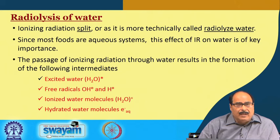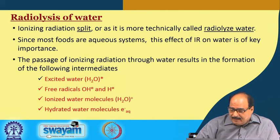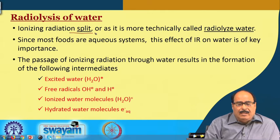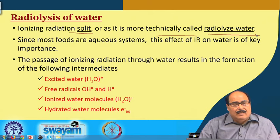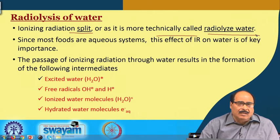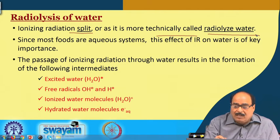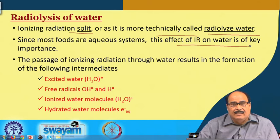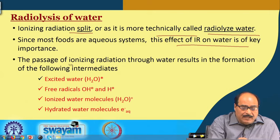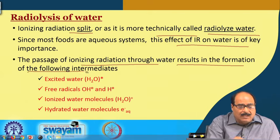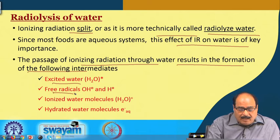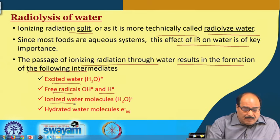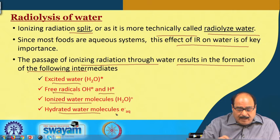Radiolysis of water — the effect of ionizing radiations on water — means these radiations split or radiolyze water. Since most foods are aqueous systems with varying amounts of water, this effect is of key importance. The passage of ionizing radiations through water results in the formation of free radicals like hydroxyl free radicals or hydrogen free radicals. It may also result in the formation of ionized or hydrated water molecules.